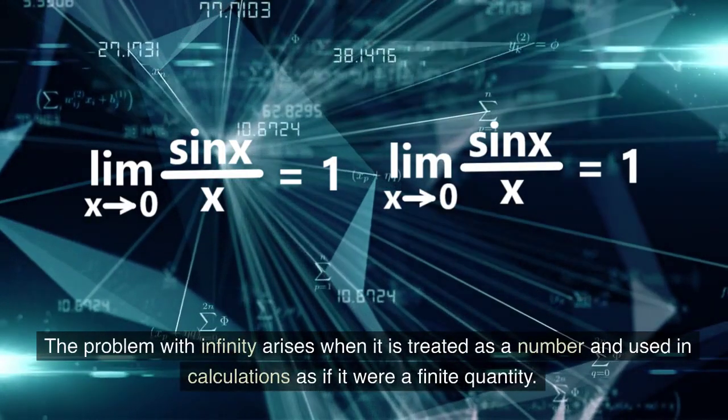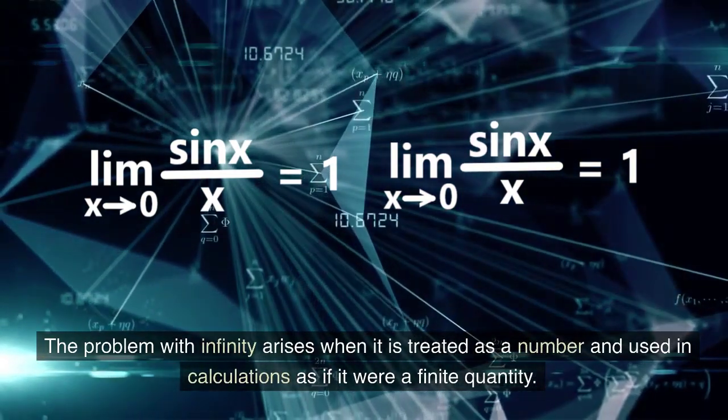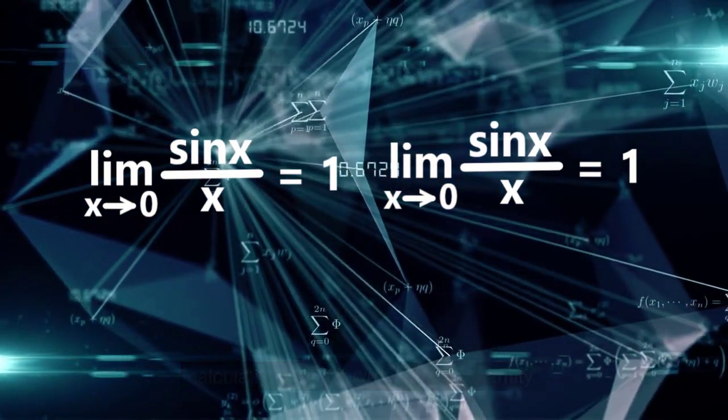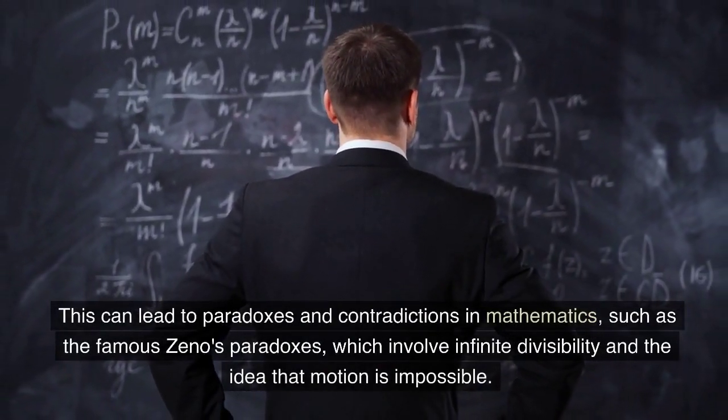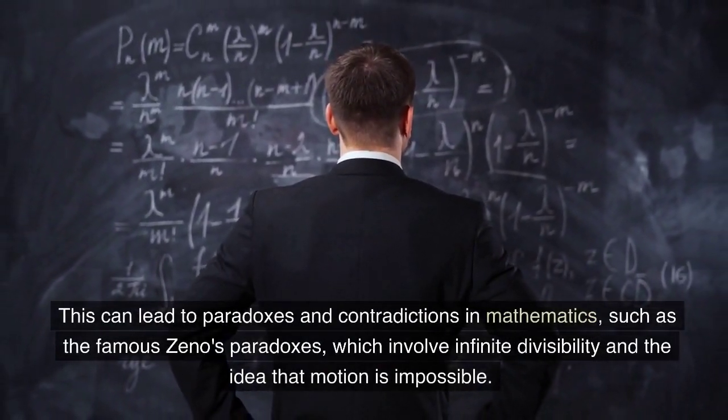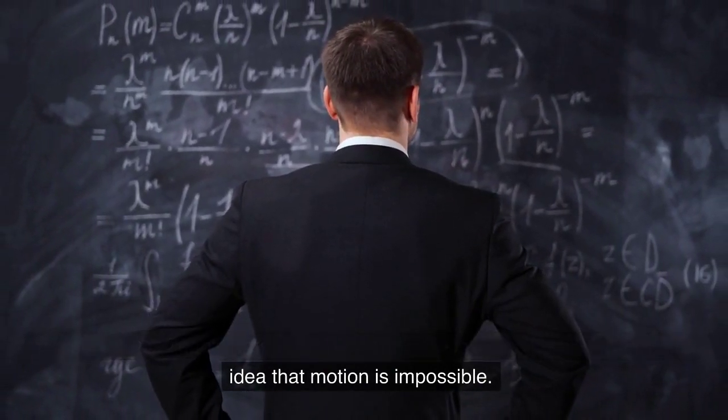The problem with infinity arises when it is treated as a number and used in calculations as if it were a finite quantity. This can lead to paradoxes and contradictions in mathematics, such as the famous Zeno's paradoxes, which involve infinite divisibility and the idea that motion is impossible.